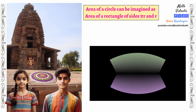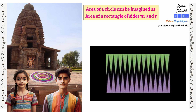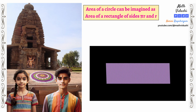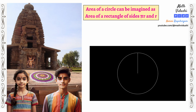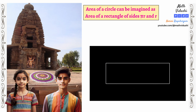You know very well that the area of a rectangle is length multiplied by width. See how the sectors of a circle join back to form a rectangle with length πr and width equal to r. So the area is πr × r, which is equal to πr².